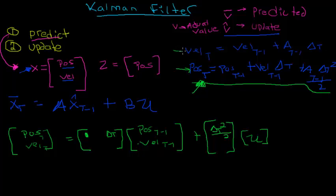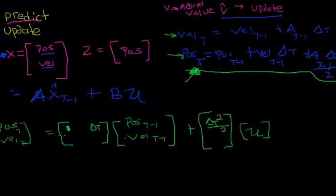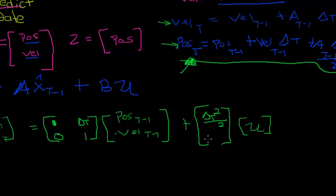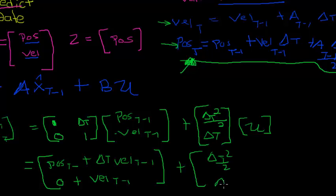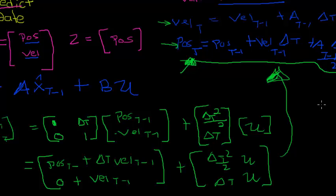For the velocity row, velocity depends nothing on position, so we put 0 and 1 for the previous velocity in matrix A, then add delta-t times acceleration from matrix B. Going through this full matrix multiplication gives us the top row as position at t-1 plus delta-t times velocity at t-1, and the bottom as the previous velocity — then adding delta-t squared over 2 and delta-t times mu respectively. This exactly matches our physics equations, and in the next video we'll go deeper into the Kalman filter and explain the intuition behind the remaining equations.